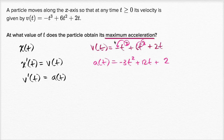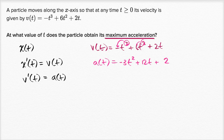We want to figure out when we obtain our maximum acceleration. Inspecting this acceleration function, we see it's a quadratic — a second degree polynomial — and we have a negative coefficient on the highest degree term, so it is going to be a downward opening parabola. It will indeed take on a maximum value.